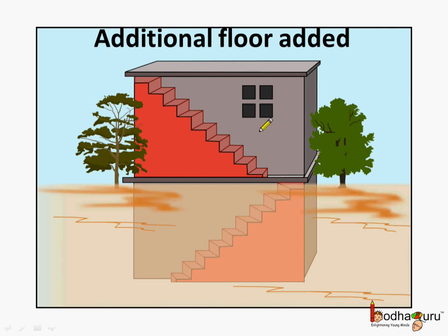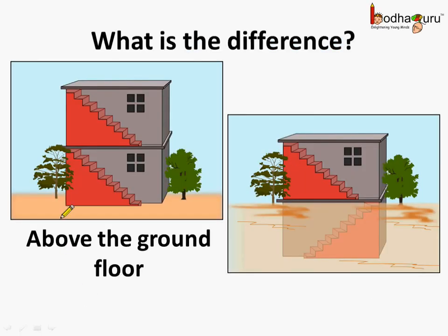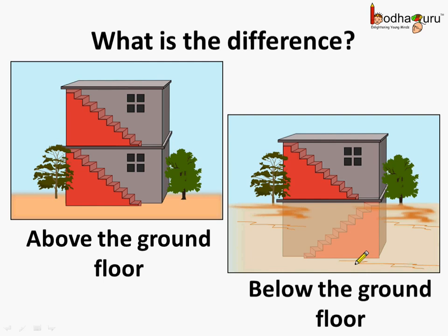Instead of adding on the top, he could also add one floor below the existing floor. This is below the ground level and we call it a basement. There is a floor above the ground floor and there is a floor below the ground floor — one is above and the second is below the ground floor.